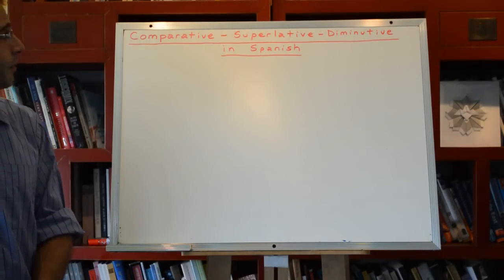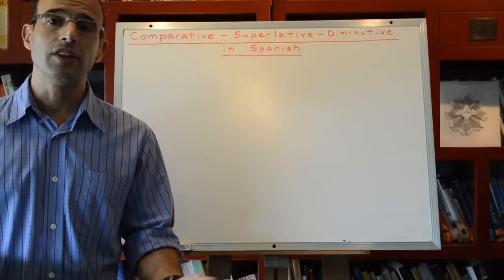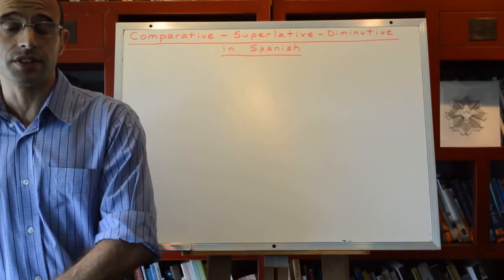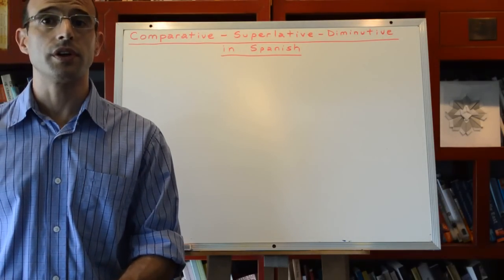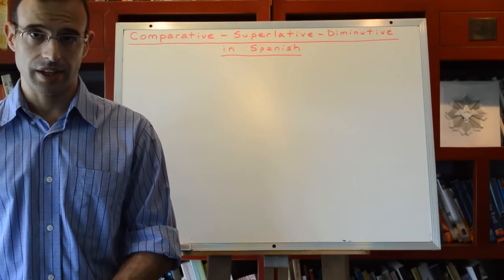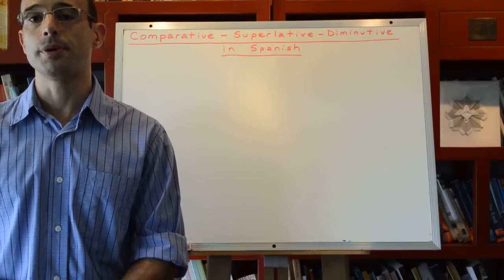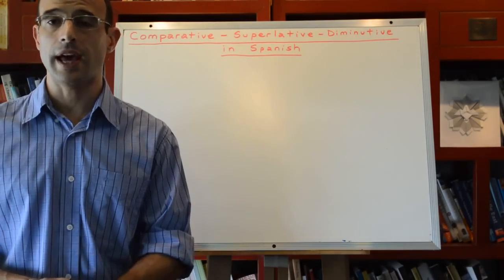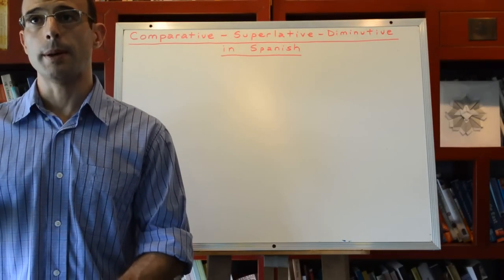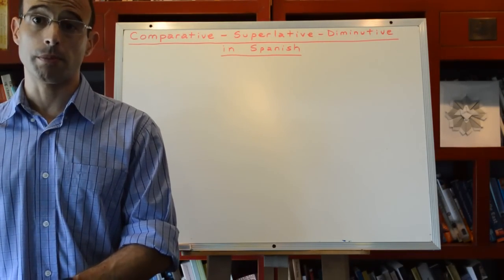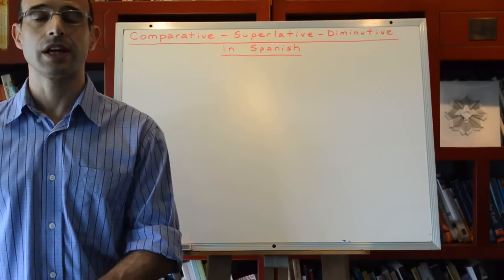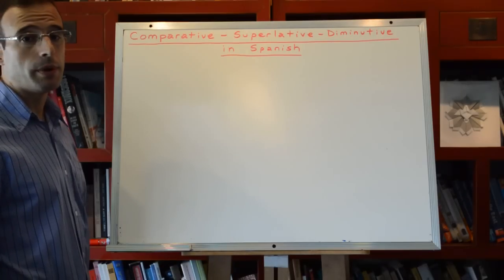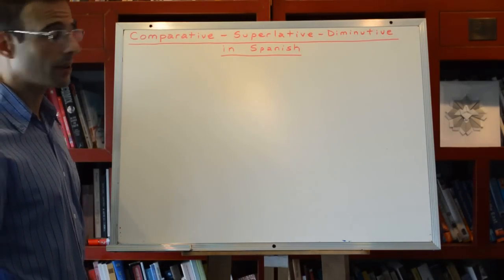So let's begin with comparative and superlative. In Spanish it's easier, in my opinion, than it is in English. In English we use the er and est suffix for comparative and superlative. For example, big is the adjective. This would be bigger for the comparative and the biggest for the superlative. In Spanish the adjective remains the same, it doesn't change.